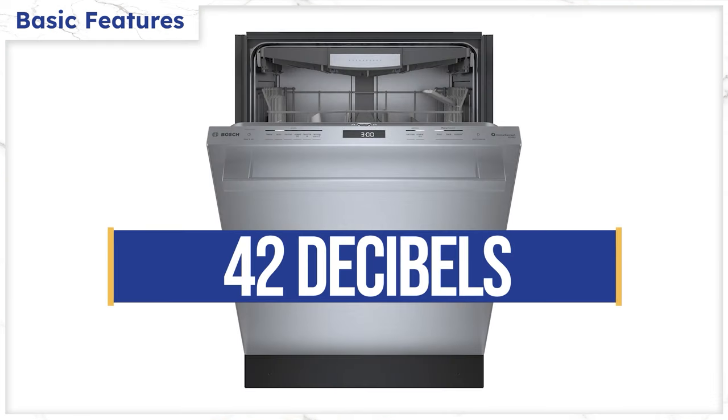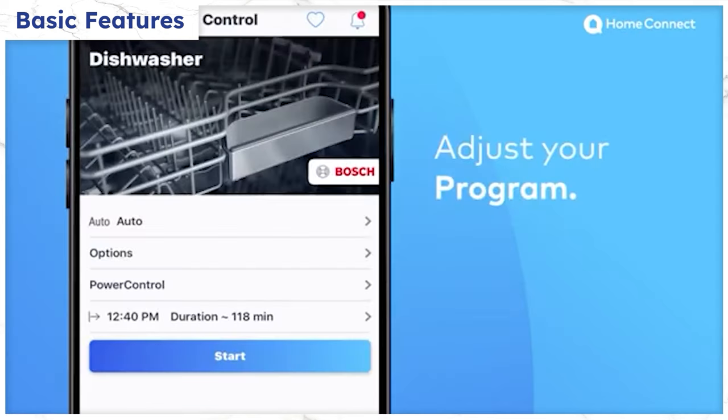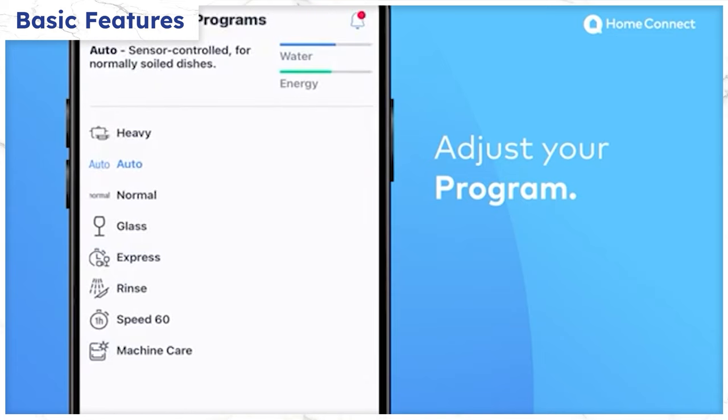First the 800 series is super quiet at 42 decibels so you won't hear it in an open kitchen while you're watching TV in your living room or even if you're just standing in the kitchen. The 800 series has plenty of cycles. You can even customize your own using Bosch's Home Connect app.